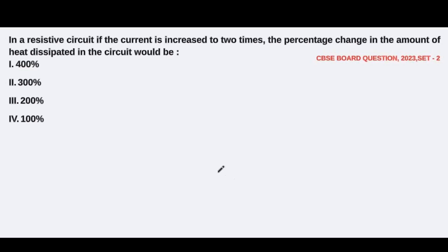Hello students, welcome back. Let's have a look at the next question. The next question is from the electricity chapter, particularly from Joule's law of heating. It goes like this: In a resistive circuit, if the current is increased to two times, the percentage change in the amount of heat dissipated in the circuit would be: 400%, 300%, 200%, or 100%?